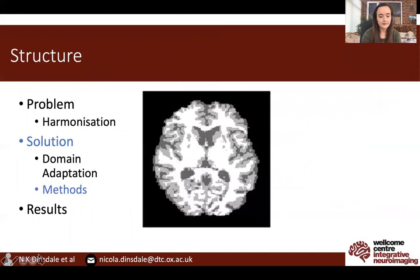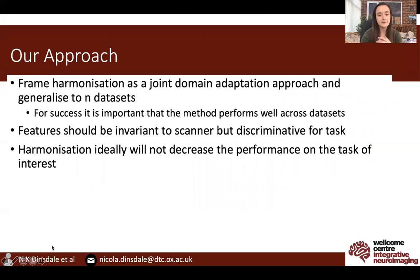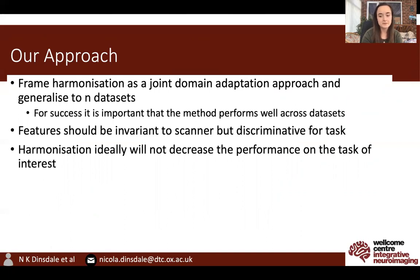So, how can we apply this to our segmentation problem? Our approach is to frame harmonisation as a joint domain adaptation approach and hope that this will generalise to end datasets. For success in harmonisation, it is important that the method performs well across both datasets — we want to be able to compare all available datasets. Therefore, the features we produce should be invariant to the scanner but discriminative for the task of interest, and harmonisation should ideally not decrease the performance on our segmentation task.